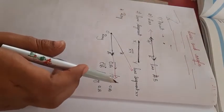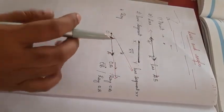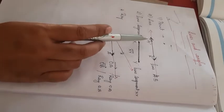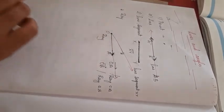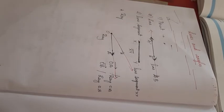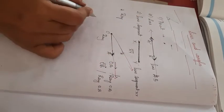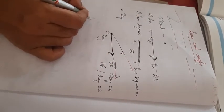Clear children? So this covers point, line, line segment, and ray. Now with this, there are two types of lines — one is intersecting lines.